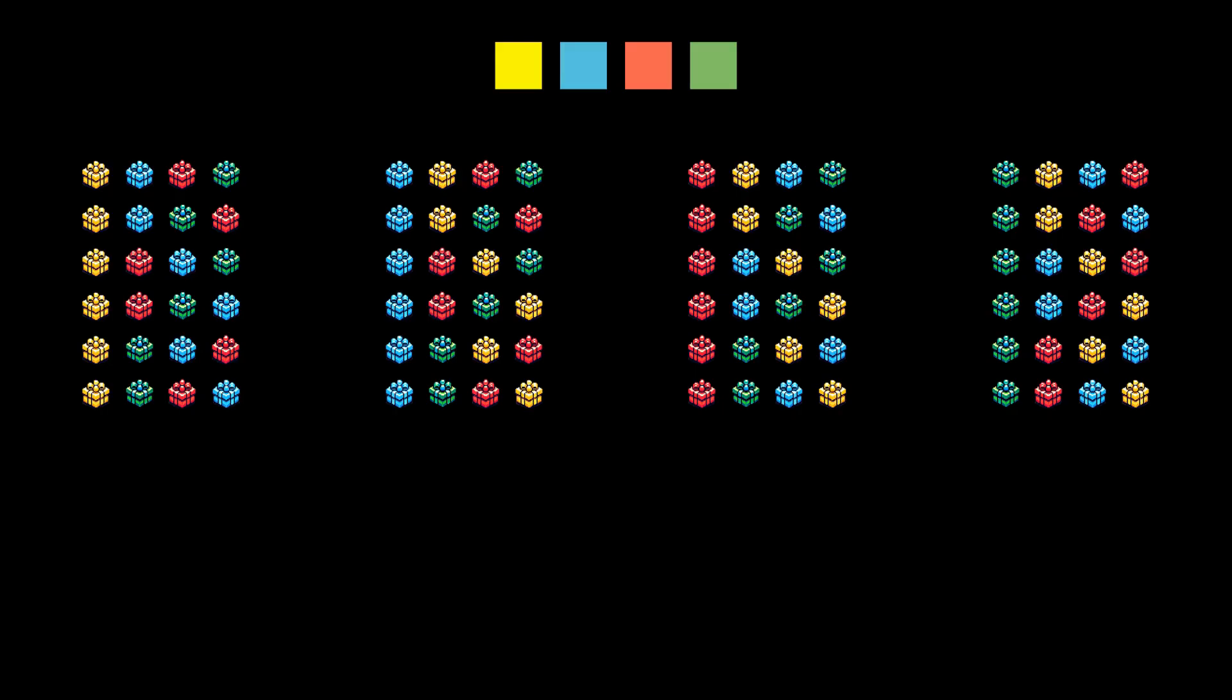Derangement is the permutation in which no presents appear in the original places. For each permutation, let's count the number of presents that actually are in the original place, such as yellow is the first, blue is the second, green is the third, and red is the fourth.